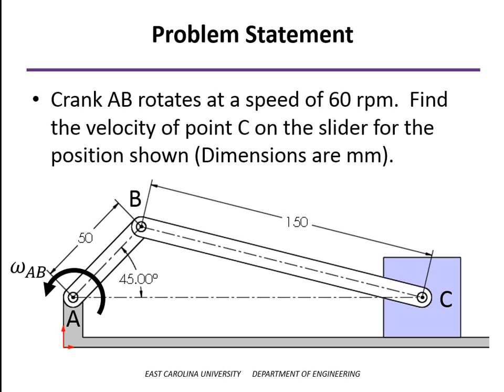The crank AB is rotating at a constant speed counterclockwise of 60 RPMs. What we want to do is find the velocity of the slider when the crank is at 45 degrees.